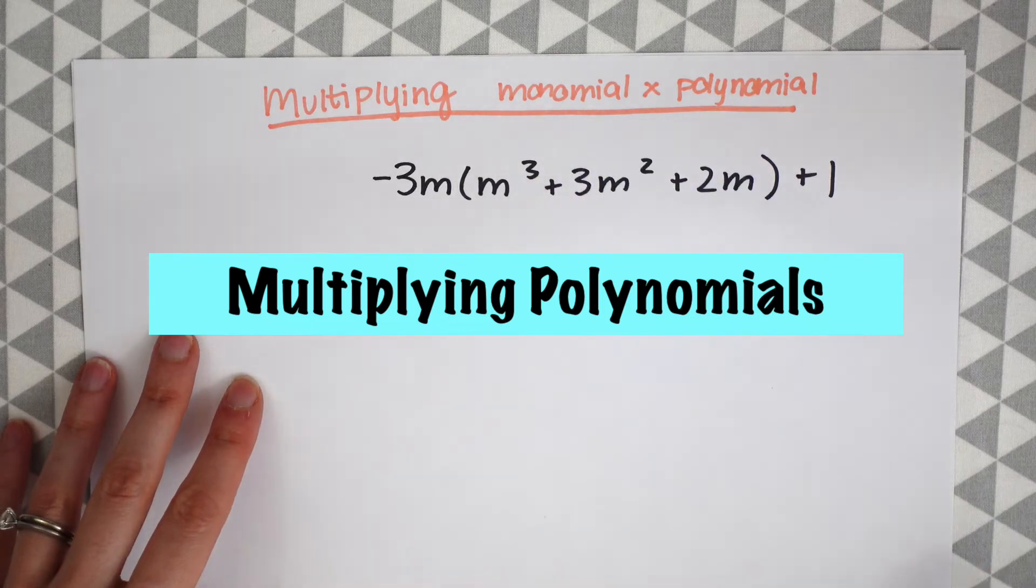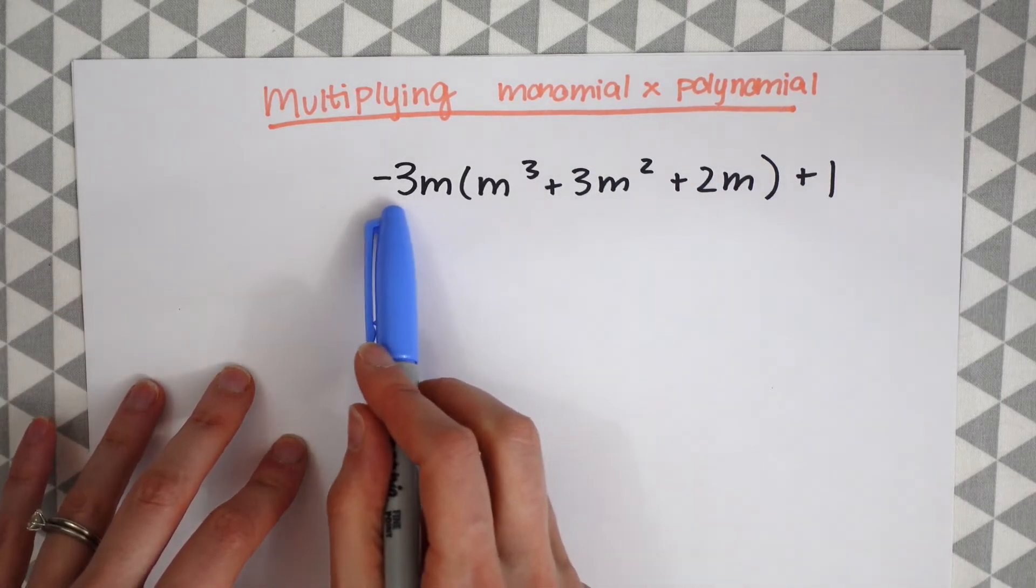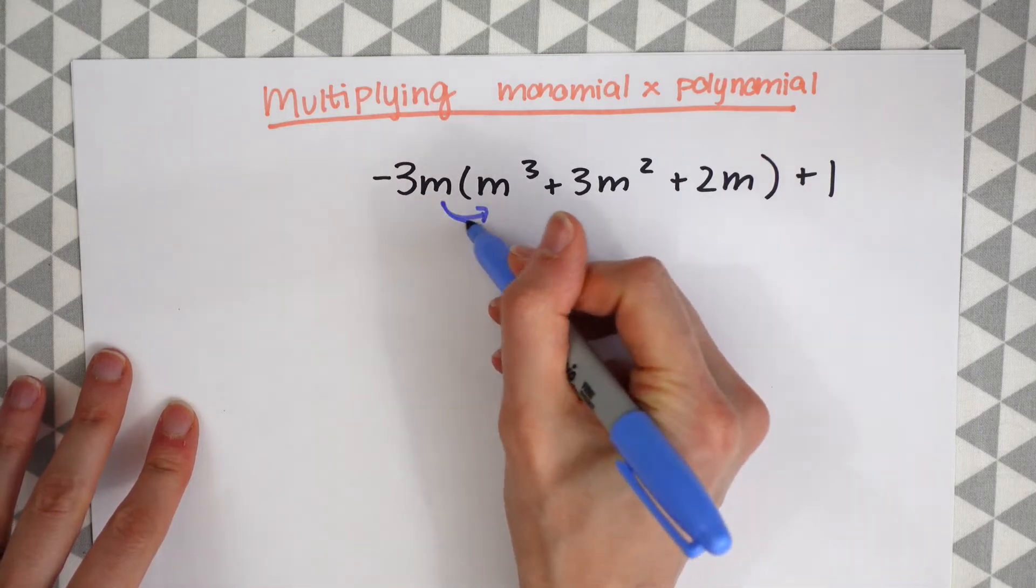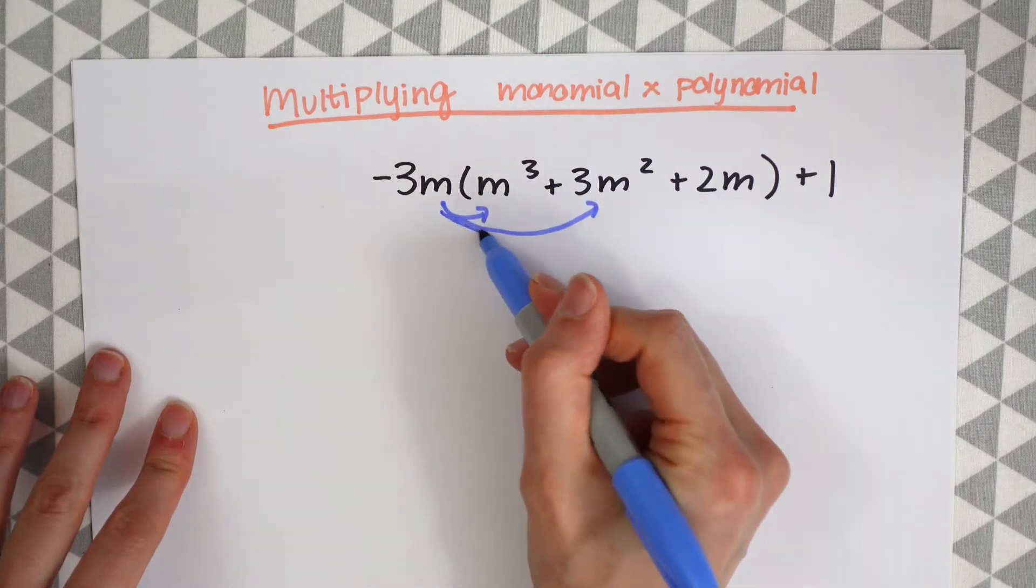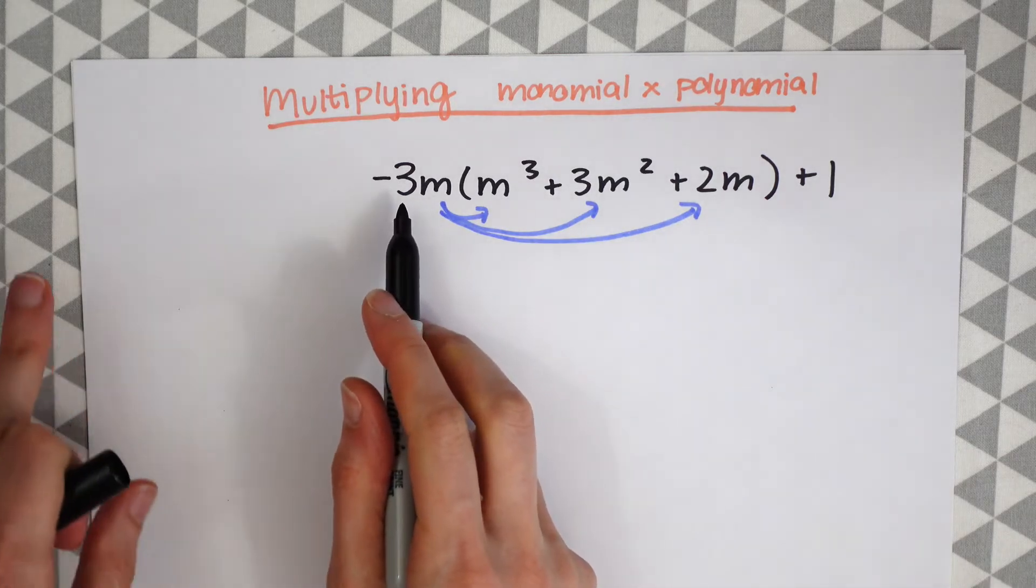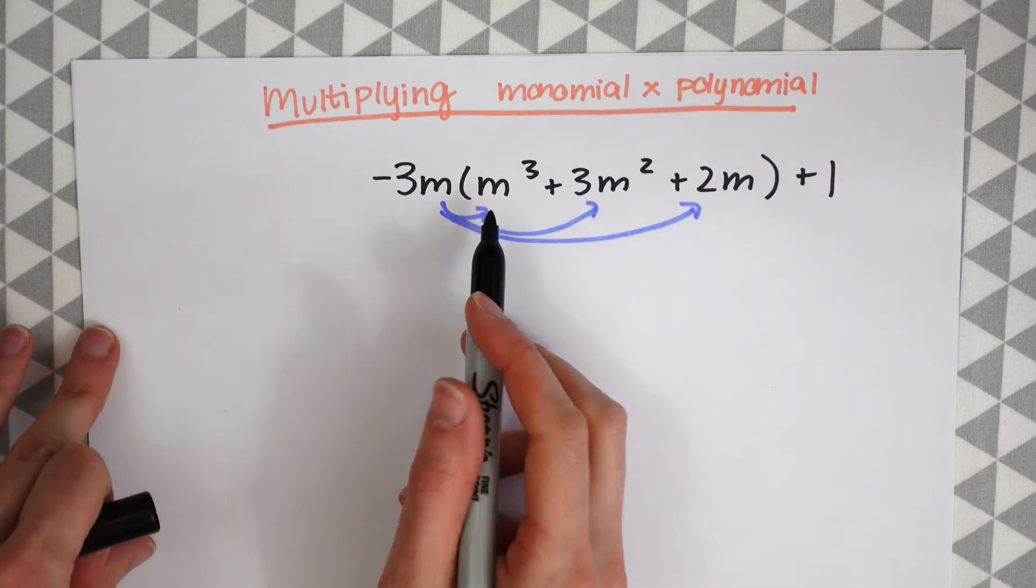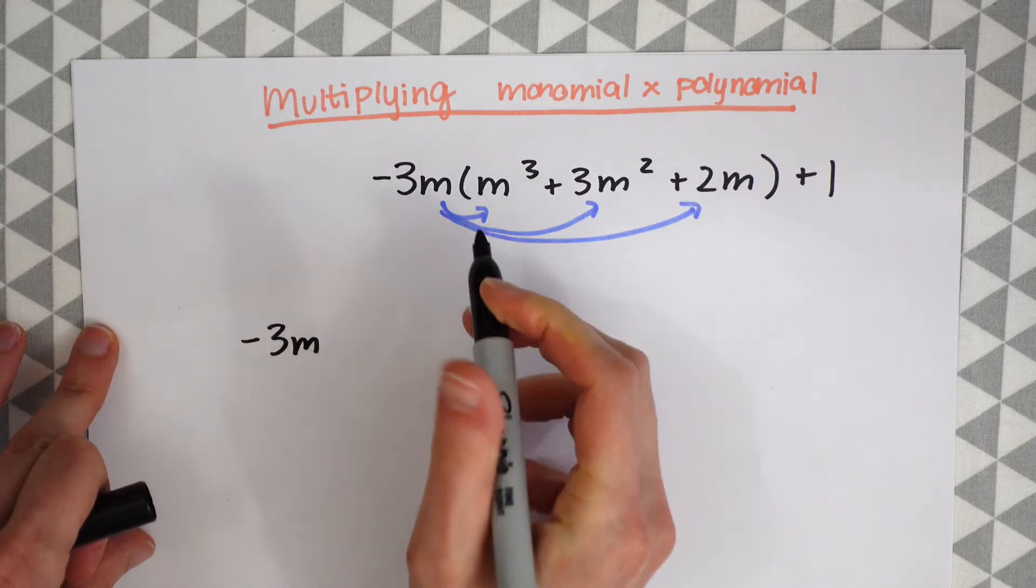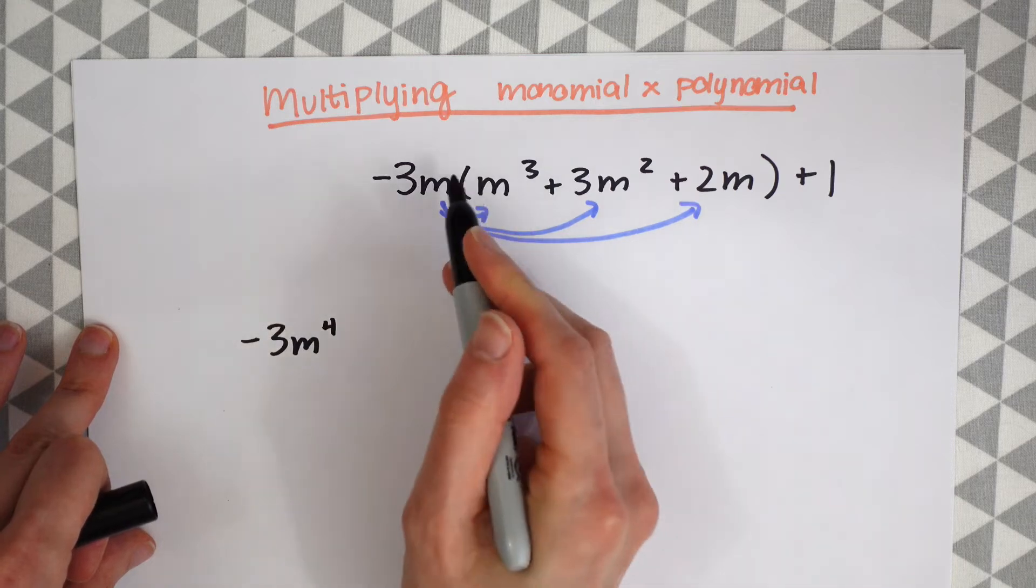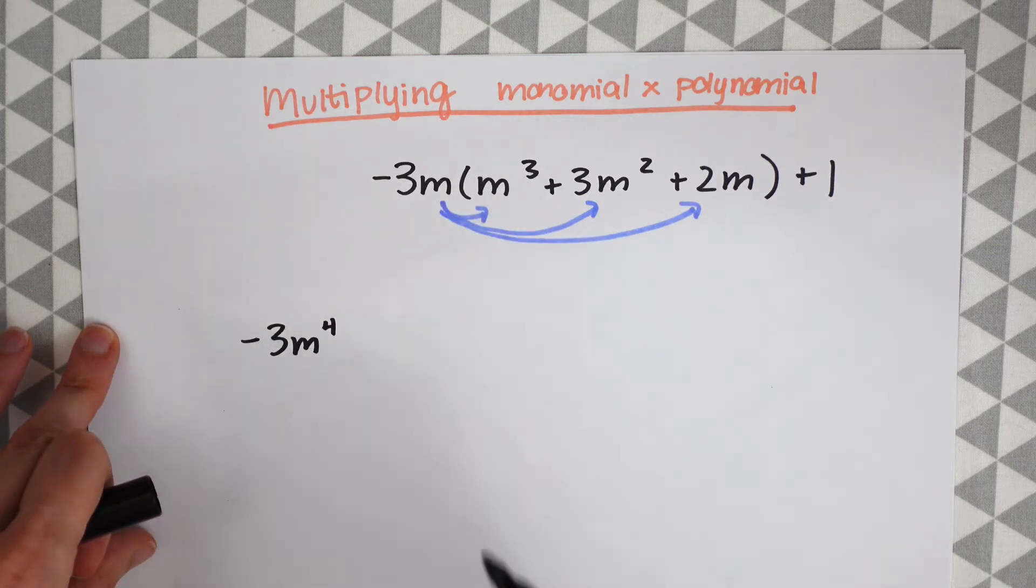Multiplying a monomial times a polynomial. So here's our monomial minus 3m. And we're just going to be distributing or multiplying this times our polynomial. So when we do that we're going to have negative 3m times m cubed which will just give us minus 3m. And then this will raise m to the 4th because we're just adding the exponents as part of those exponent rules.